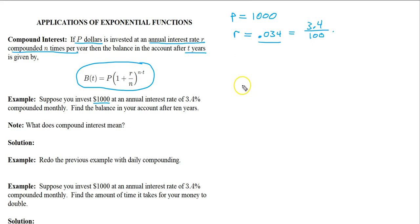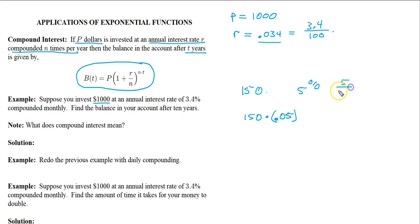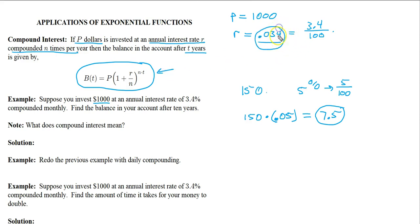The reason we use the decimal is this: suppose you have $150 and you want 5% of it. You multiply 150 times 0.05 — not by 5 — which is 5 over 100, and you get 7.50. So 7.50 is 5% of $150. In this formula, r refers to the decimal value, not 3.4, because interest rates are usually stated as a percent for convenience.